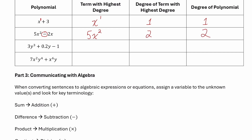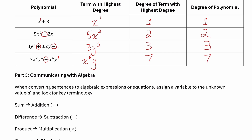The third polynomial has three terms separated by addition and subtraction operators. The highest-degree term is 3y cubed, which is degree 3, so the polynomial is degree 3. The last polynomial has two terms separated by the addition operator. The first term has exponents summing to 6, and the second term has exponents summing to 7. So x to the 6 y is the highest-degree term at degree 7, meaning the polynomial is degree 7.